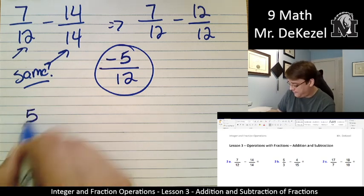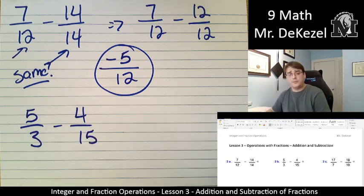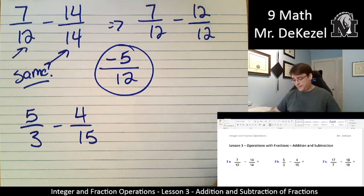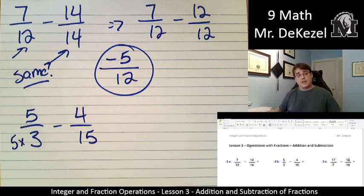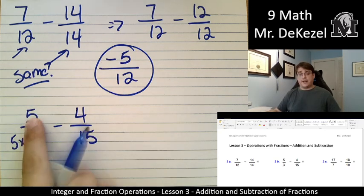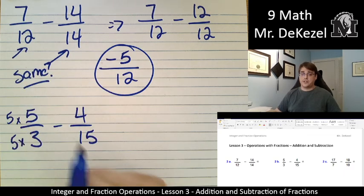We've got 5 thirds minus 4 fifteenths. Again, the denominators are not the same, so we need to make them the same. I can turn this denominator into 15 if I multiply it by 5. So if I'm going to do that here, I need to do that at the top as well. Whatever I do to the bottom in a fraction, I need to do to the top.